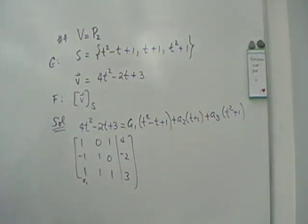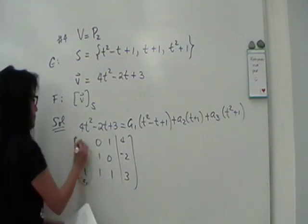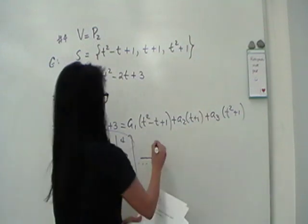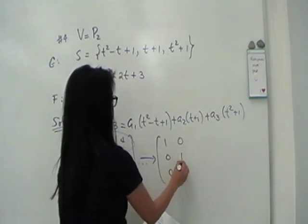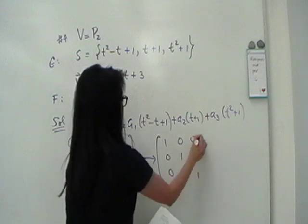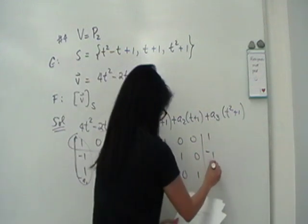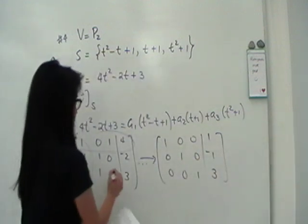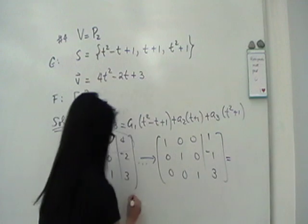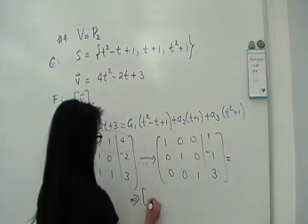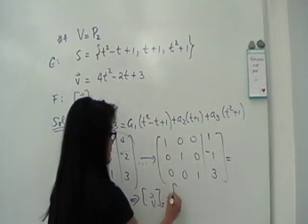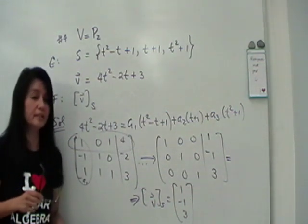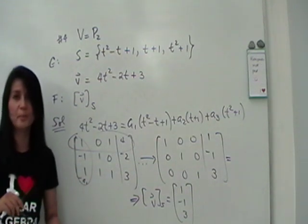Do it a bunch of times until you end up with, in this case, I ended up with the identity matrix. And I got 1, negative 1, 3. So, therefore, that tells me that, I hope you see this, the coordinate vector of V with respect to S is 1, negative 1, 3. So, it's, again, solving a system of linear equations. That's mainly what linear algebra is all about.